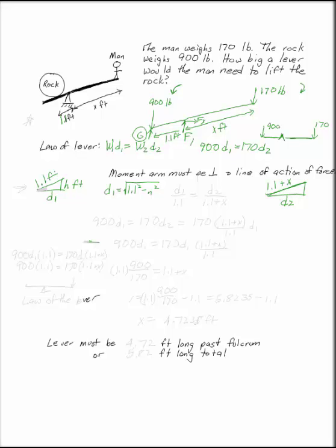I can say d1 over 1.1, the horizontal over the hypotenuse, is going to have to be similar to d2 over 1.1 plus x from our similar triangles. Now I can use my law of the lever.